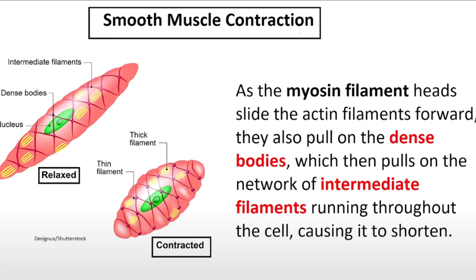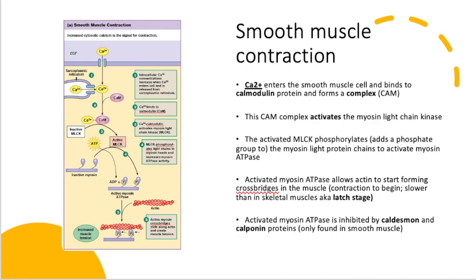Smooth muscle contracts through the sliding filament mechanism, just like skeletal and cardiac muscle. When calcium ions trigger myosin phosphorylation and myosin-actin cross bridges form and pull together, contraction happens — and it also pulls on the dense bodies since the thin filaments are attached to them. The intermediate filaments are also attached to those dense bodies, resulting in contraction of the entire smooth muscle fiber. That's it for classifications — we're now going to jump into contraction. I've compressed about four to five slides into two: a smooth muscle contraction slide and a relaxation slide.